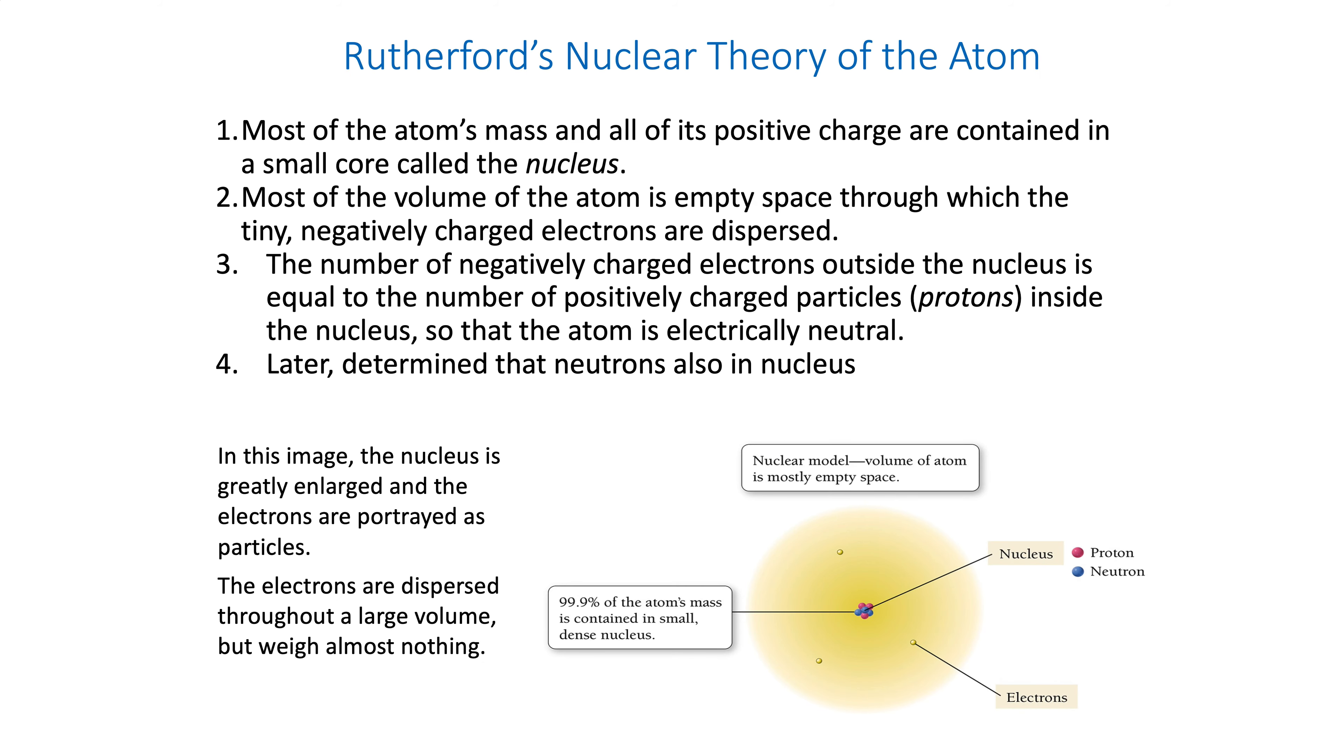So this is Rutherford's conclusion, right? Most of the atom's nucleus and all of its positive charge are in the nucleus, most of its mass, excuse me. They didn't know about neutrons. Most of the volume is empty space. The atom is mostly nothing. Just to put it in perspective, the radius of an atom is about 10 to the minus 10 meters. Nucleus, 10 to the minus 15. So 100,000 times smaller.